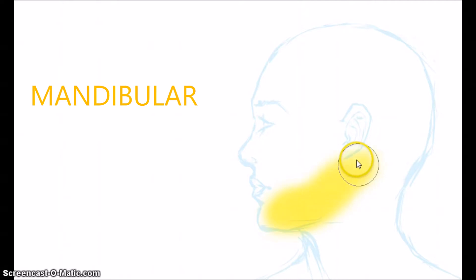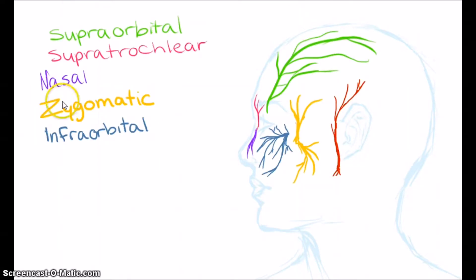The final branch of the trifacial nerve is the mandibular, which extends to the lower one-third of the face and divides into two parts. The auriculotemporal affects the ear and the top of the head to the temple.